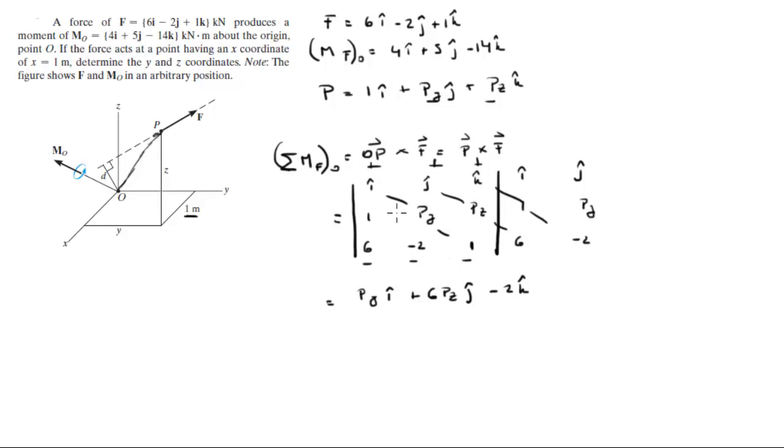And now you do your negative diagonals. 6 times Py times k is negative 6Py in the k. Negative 2 times Pz times i is positive 2Pz in the i. And negative 1 times 1 times j is minus 1 in the j.